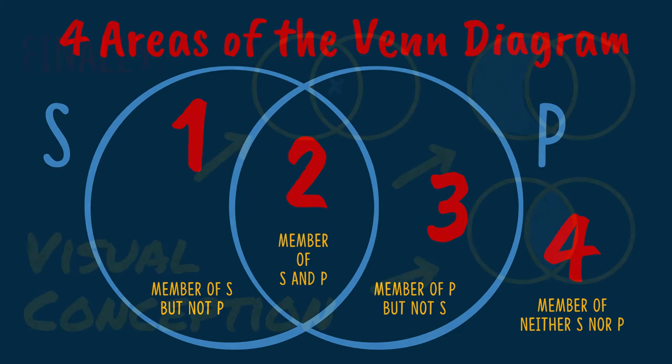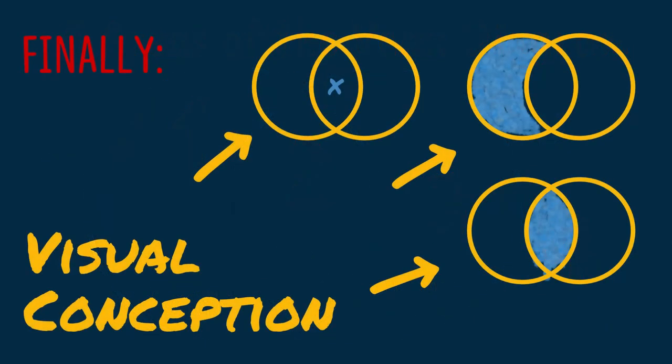What we want to do is to have a method for translating categorical statements into Venn diagrams. Memorization is important, but so is conceptualization. So here's how we're going to do it.